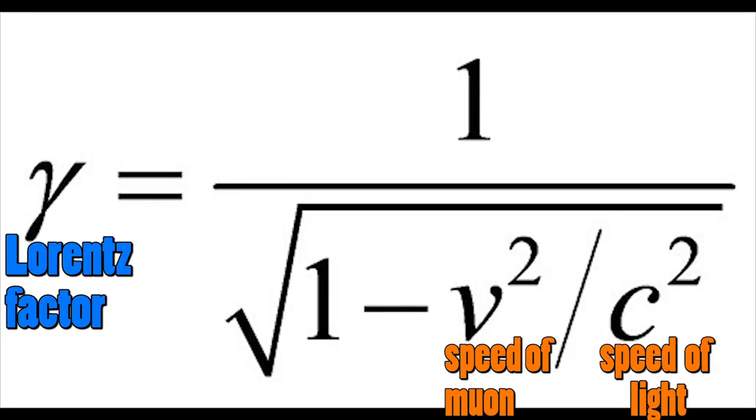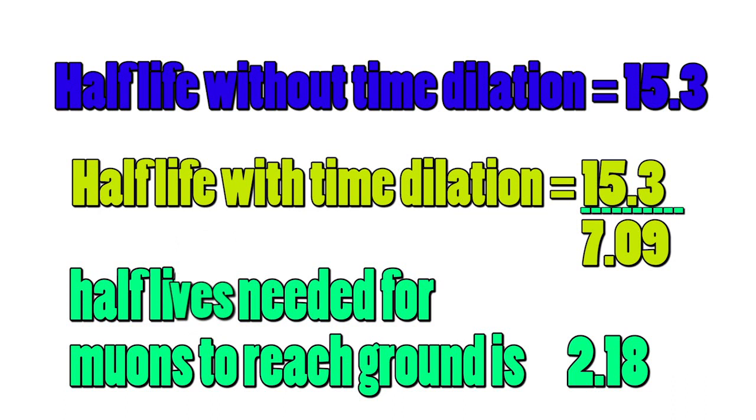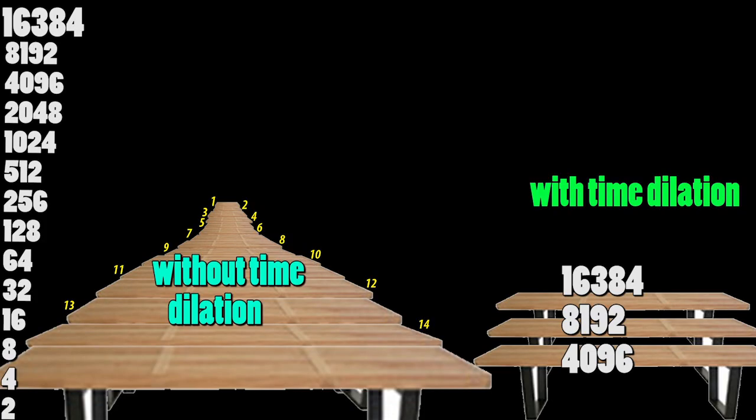So now when we calculate the half-life, it comes out that they won't require 15.3 half-lives but just 2.8 half-lives to reach the ground, as their time would get slower relative to us. This means they won't have to pass 15 rows but just like 2 or 3 rows.